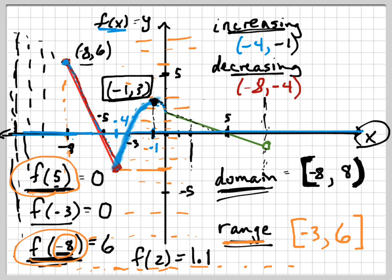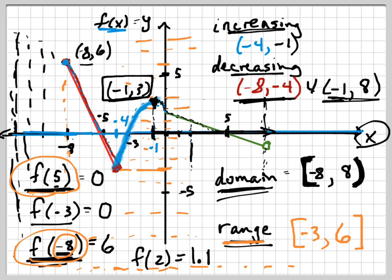So it's increasing from negative 4 to negative 1, and then what happens from negative 1? Now I'm going from negative 1 to the right — what happens to the y values, the function values? Are they going bigger or smaller as I go to the right starting at negative 1? Smaller. They're getting smaller. So it's decreasing from negative 1 to positive 8. There are two decreasing intervals, so I put a union symbol between them. The union means it's decreasing from here and also in this other interval.